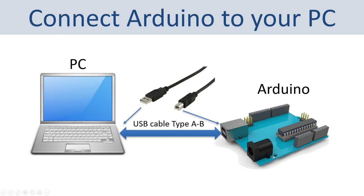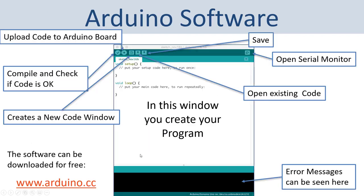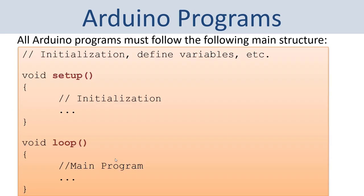The first thing you need to do is connect your Arduino board to your computer using a USB cable. When the hardware is set up, you need to download the Arduino software — you can download it for free from the Arduino webpage. Here you see an overview of the Arduino software. Typically all Arduino programs need to have this basic structure: on top you can have some initialization and define global variables, then you have a setup function for initialization code, and then a main loop where you create your main application.